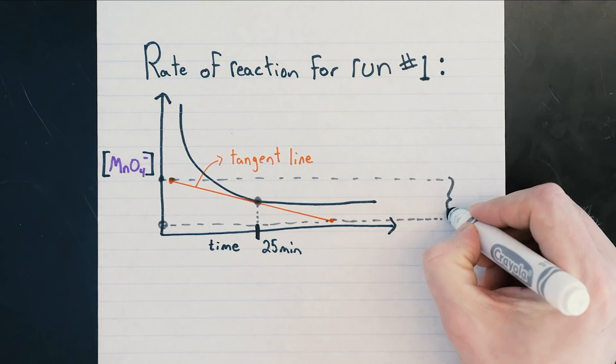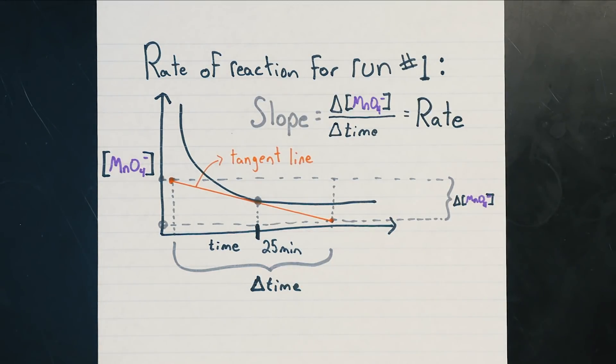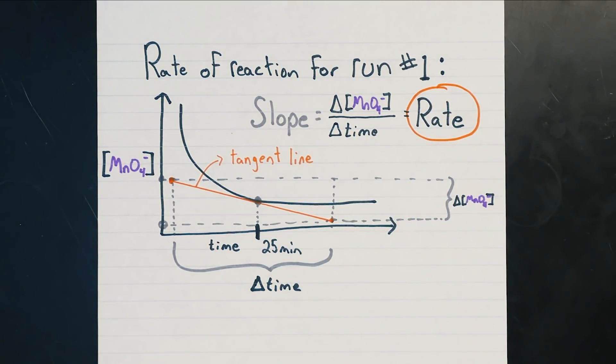The slope is equal to the change in concentration over the change in time, which tells us how fast the concentration is changing per unit time, and this is exactly what we're looking for.